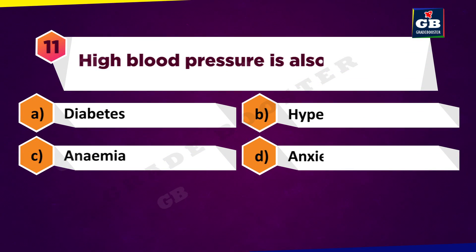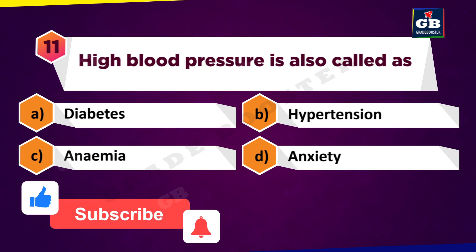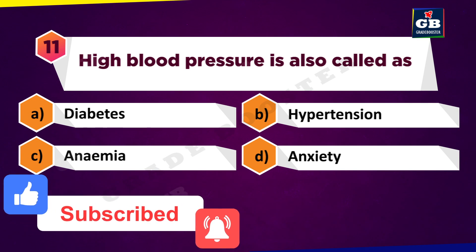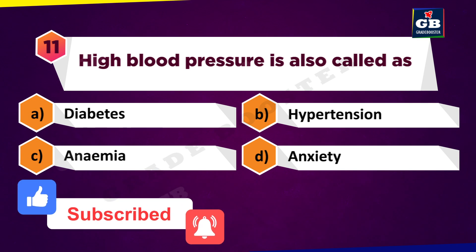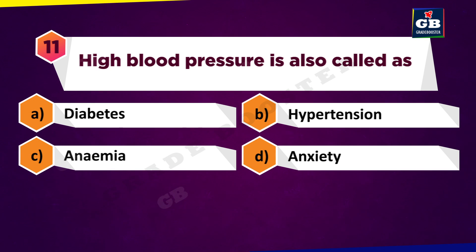High blood pressure is also called as: A. Diabetes, B. Hypertension, C. Anemia, D. Anxiety.